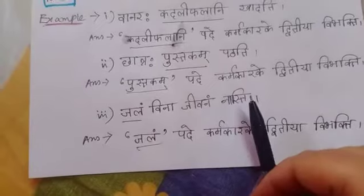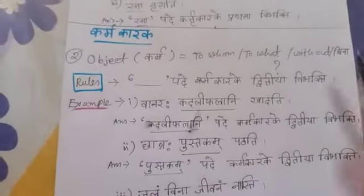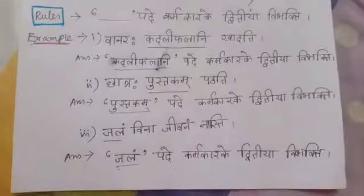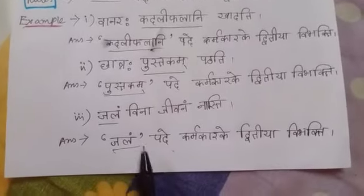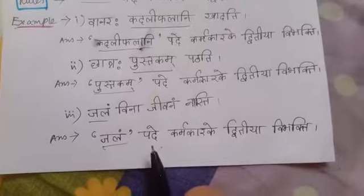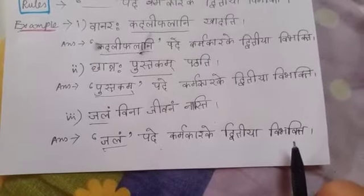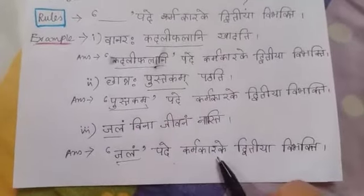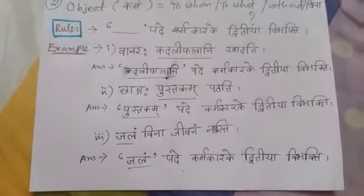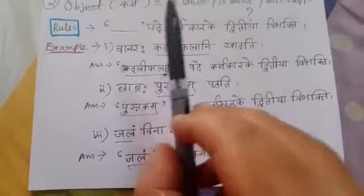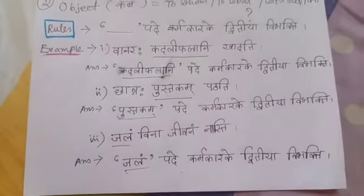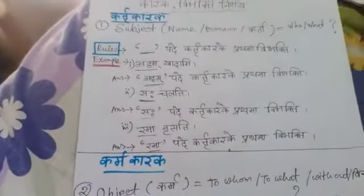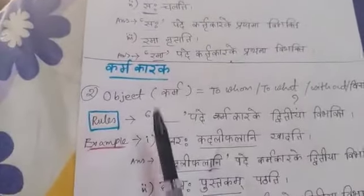Another example uses 'bina' meaning 'without'. Where we find 'bina', that is also object — karma karake dvitiya vibhakti. The key rule is: just understand whether the underlined word is subject or object. If it is karta then it is subject, and if it is object then it is karma karak.